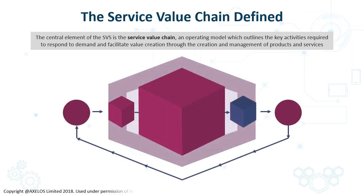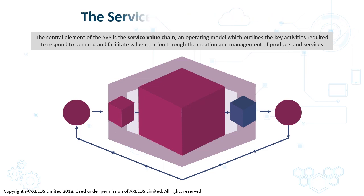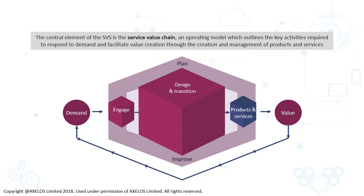As seen in this diagram, the ITIL service value chain has six value chain activities, which lead to the creation of products and services and, as a result, value. The six value chain activities are plan, improve, engage, design and transition, obtain, build, and deliver and support.